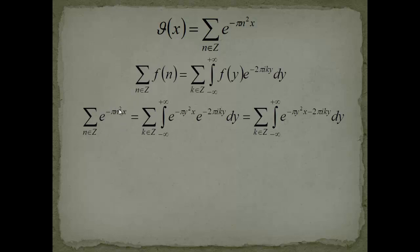I'm applying the Poisson formula to our theta function, using f(n) = e to the minus pi n-squared x, where n is the variable. On the right-hand side, I get e to the minus pi y-squared x, multiplied with e to the minus 2 pi i k y, dy. Because we have two exponentials, we can combine them into a single exponential.